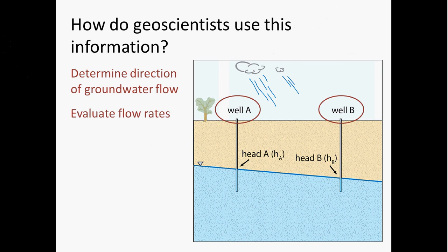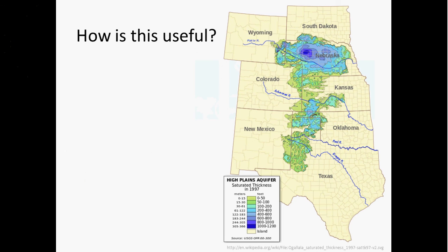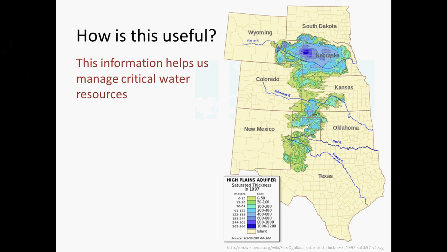We can use this to help understand flow rates by assessing groundwater flow and combining it with knowledge of geological properties of aquifers, evaluating how much water is available and how that changes over time. Given the extent to which we rely on groundwater as a source of drinking water and irrigation water, this information is extremely important for managing critical water resources effectively. One example I'll focus on in the next lecture is the High Plains Aquifer — an aquifer that plays a vital role in sustaining human populations in the Great Plains, and one that's up against some serious challenges in the future.